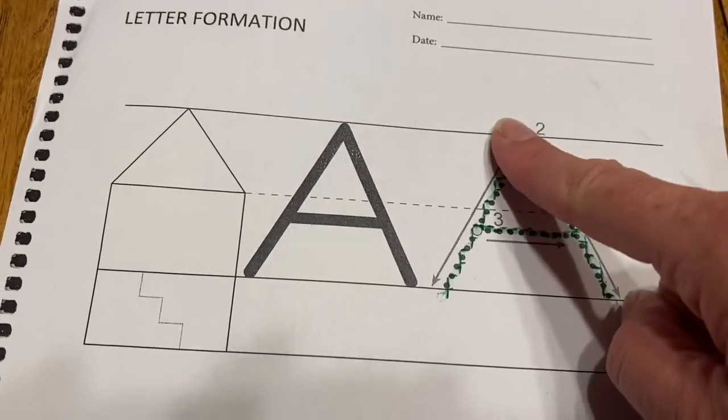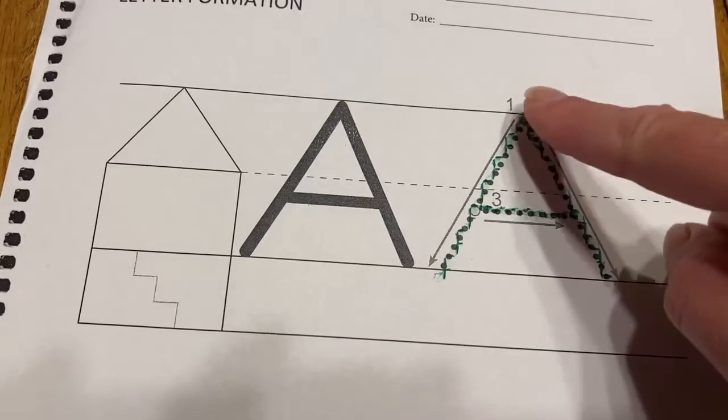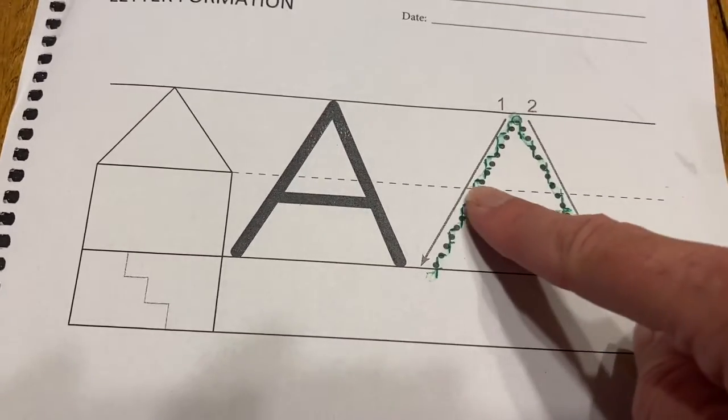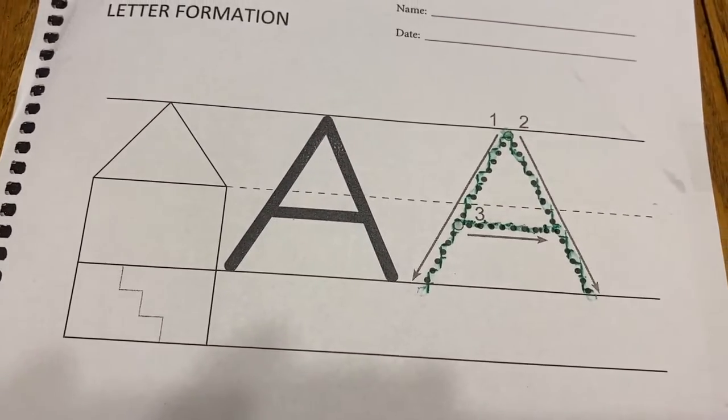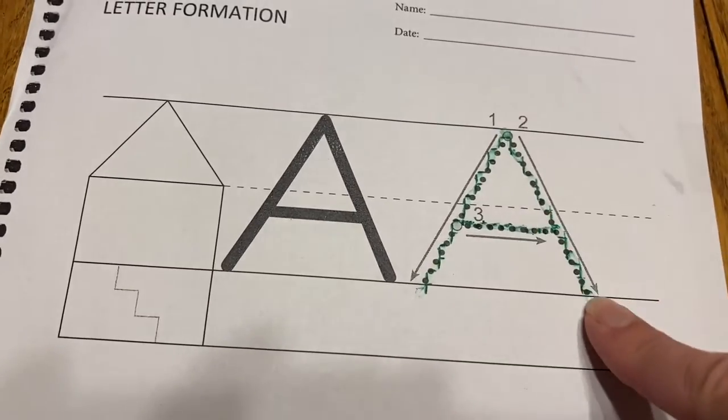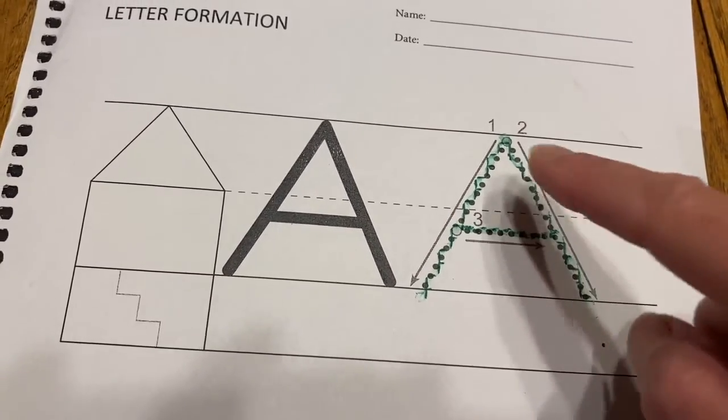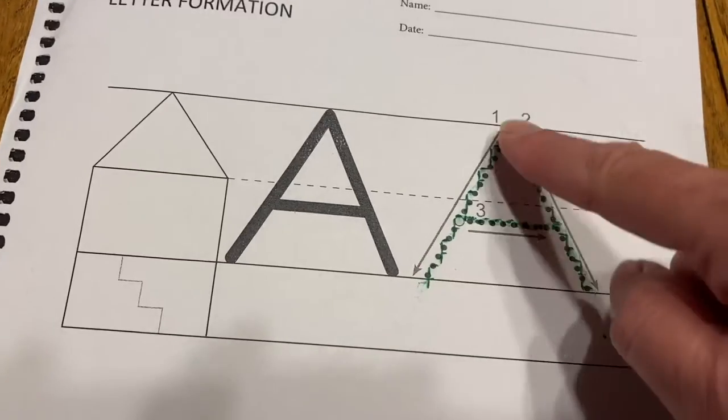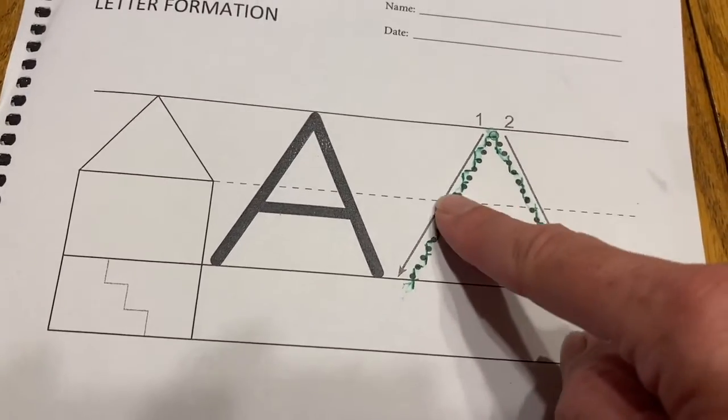You're going to take your tracing finger and trace the bumps. Feel those bumps. Trace again. Trace one more time. Diagonal down, diagonal down, line across.